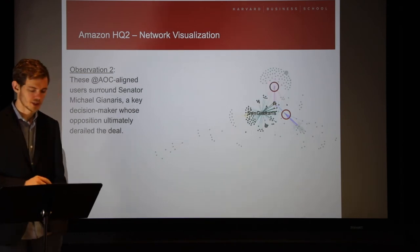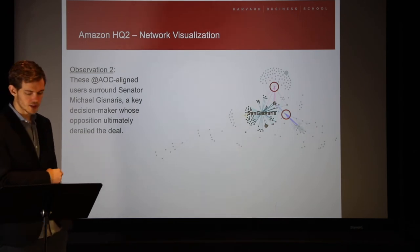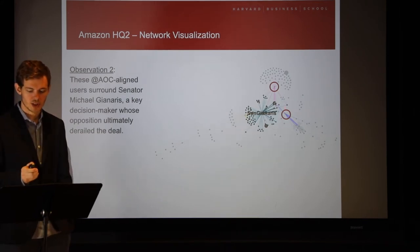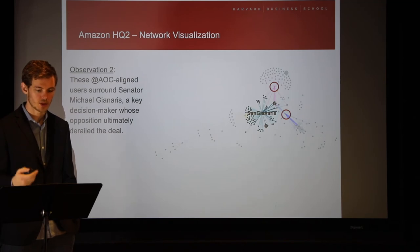And this is where it gets really interesting, because in this graph you see a group of Democratic-socialist accounts literally surrounding one user, State Senator Michael Gianaris. He's the one I mentioned earlier, whose opposition to the deal and nomination to a key oversight board ultimately derailed the project.